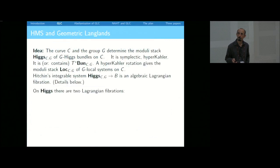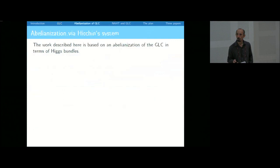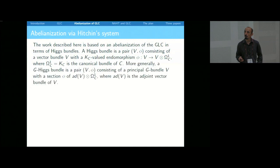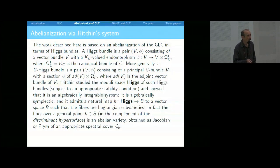I talked a bit about the hypothetical relation between geometric Langlands and homological mirror symmetry, but I'm not going to review that today because I'm not going to use it at all. Instead, I'm going to use the abelianization approach, working with the moduli space of Higgs bundles on which we have the Hitchin integrable system. Hitchin studied this moduli space and found an integrable system on it — a map little H from Higgs to base B.